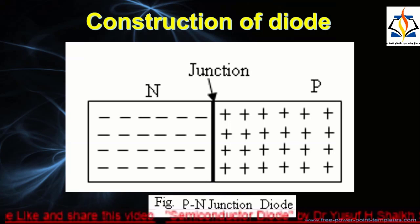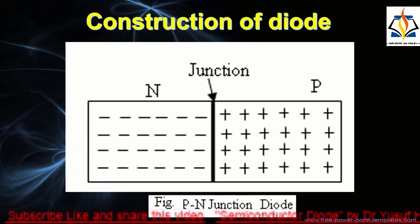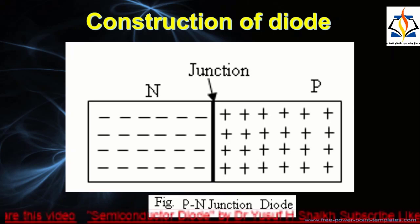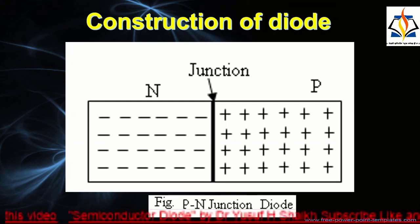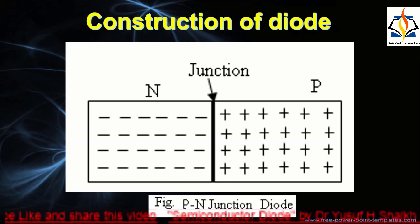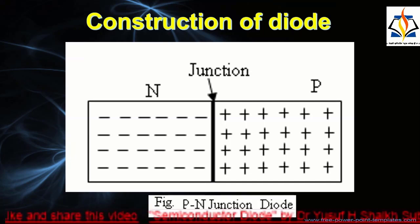The p-n junction diode is as shown in the figure. The n-type region has electrons as majority carriers and the p-type region has holes as majority carriers. In addition to these majority carriers, a few minority carriers are also present in each region. There is a greater concentration of holes in the p-region than in the n-region, and the n-region has a greater concentration of electrons than the p-region.